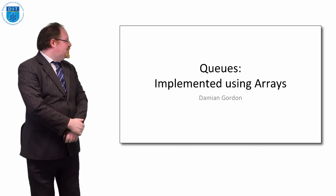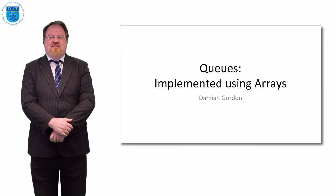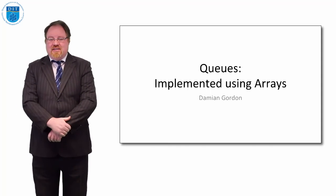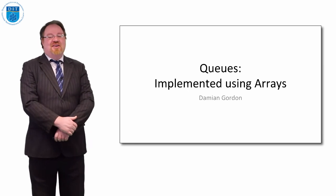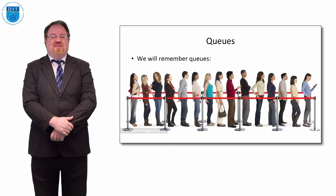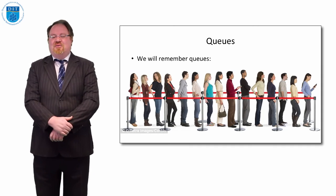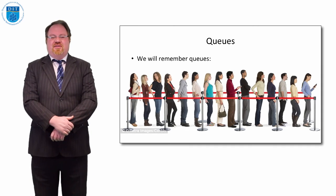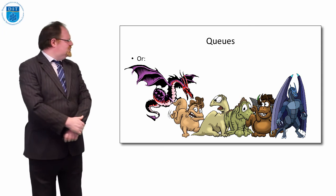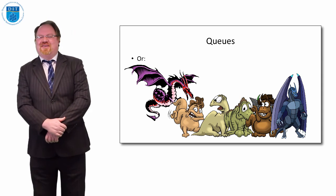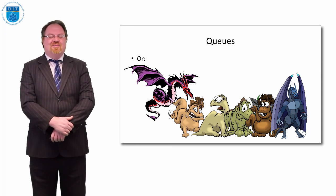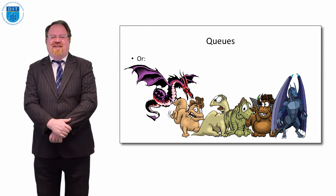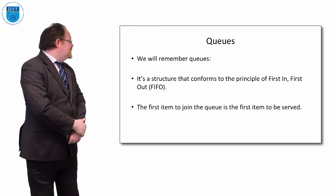Welcome to this episode of Programming and Algorithms. In this episode we're going to look at queues — an abstract data type — and how to implement it using an array. Everybody knows what queues are about: you stand at the back, wait until you get to the front, and then you get served at the front. The principle is the same even for a monster queue — whoever is at the front gets served first. We call that principle FIFO.